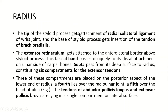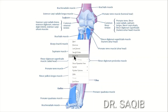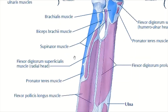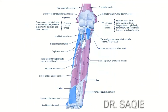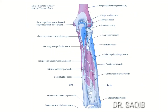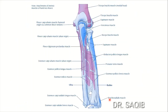The tip of the styloid process receives attachment of the radial collateral ligament of the wrist joint, and the base of the styloid process receives the insertion of the tendon of brachioradialis. Here you can see the brachioradialis muscle attachment on the radius.